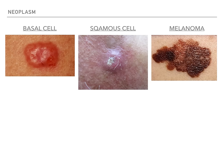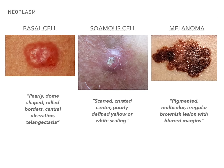Basal cell carcinoma is a pearly dome-shaped lesion with rolled borders, central ulceration, and telangiectasia. Look at the picture — it's pearly, dome-shaped, has rolled borders, might have central ulceration, with telangiectasia. If you see little blood vessels growing in this smooth, pearly looking pink rolled bean-looking lesion, that's basal cell carcinoma.